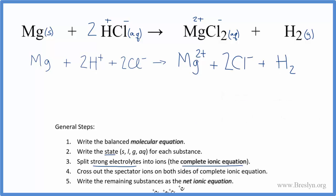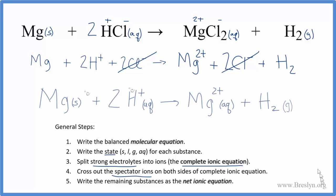Now we cross out the spectator ions — these are ions that appear on both sides unchanged. The only thing that's the same on both sides is Cl−. We have 2Cl− on each side, so we cross those out. That gives us the net ionic equation: Mg + 2H⁺ → Mg²⁺ + H₂.